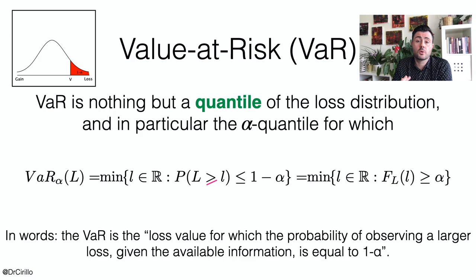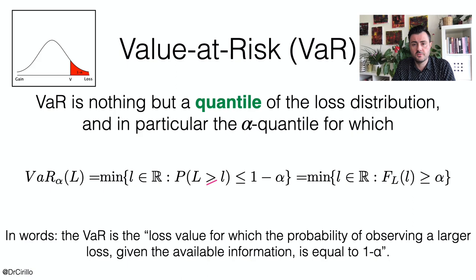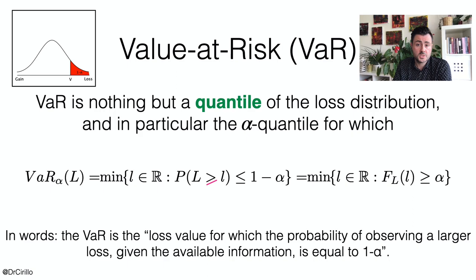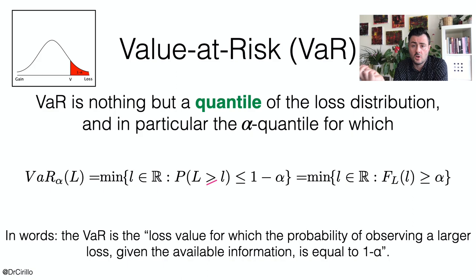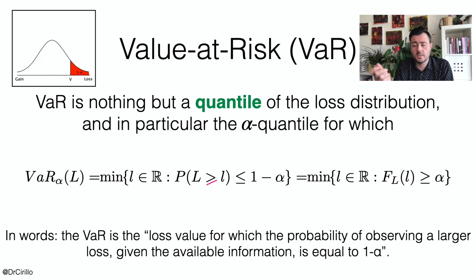Once we have this distribution, the VaR is nothing more than the alpha quantile of that distribution, where alpha is the confidence level we choose for the VaR. A typical example is the 95% VaR, so alpha is 0.95, or the 99% VaR where alpha is 0.99. We even have 99.9%, which is prescribed by the Basel framework. The VaR is the quantile of the loss distribution such that 95% of the losses we can expect from our investment will be lower — and only 1 minus alpha, that is 5%, will be larger. It's just a quantile.